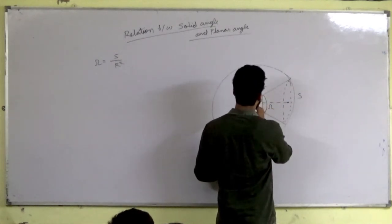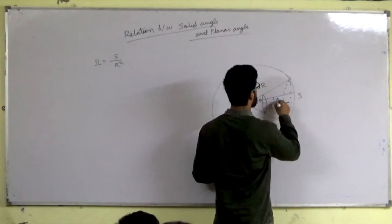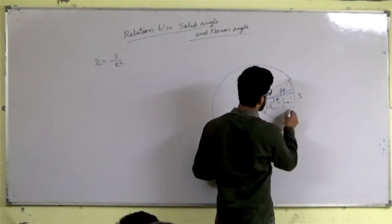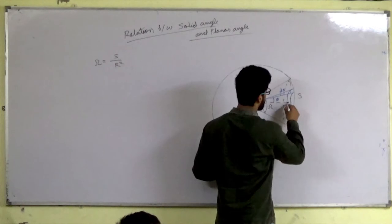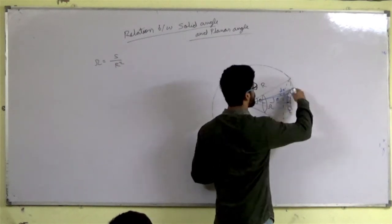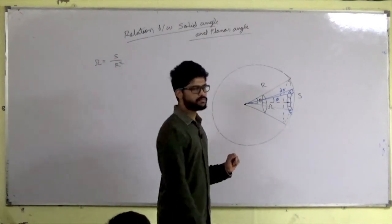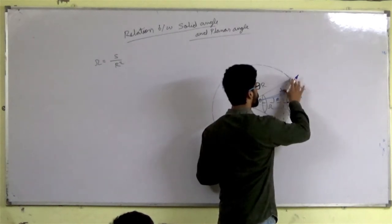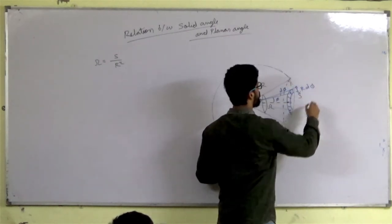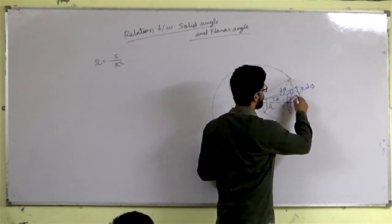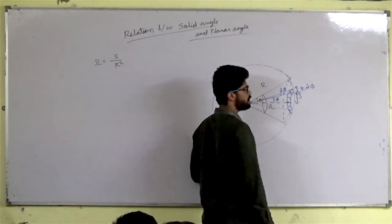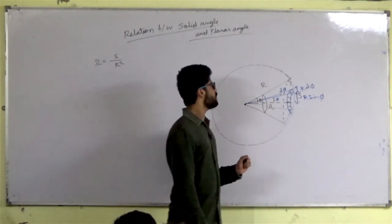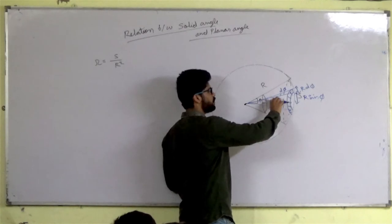What is the element dS? You have a ring. How much width does it have? It has a ring on this surface. So this width will be R dphi. The width is R dphi. And what will the radius of this ring be? R sin(phi). This will be R sin(phi).